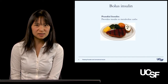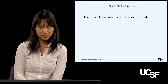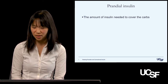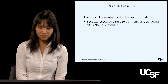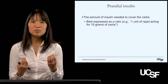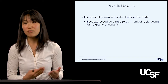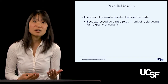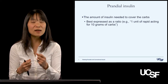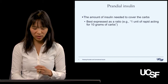So let's start with prandial insulin. Prandial insulin is the amount of insulin needed to cover the carbohydrates eaten in a meal. When you think about prandial insulin, it's best to think of it as a ratio — for example, one unit of rapid-acting insulin for 10 grams of carbohydrates eaten. You may not necessarily prescribe it as a ratio, but as a provider you would think of it as a ratio.